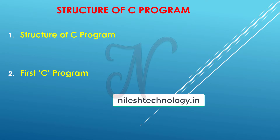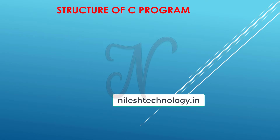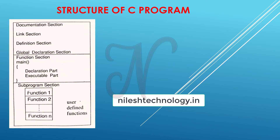First we discuss the structure of a C program. This is the format of a C program. In the documentation section, it consists of comment lines.